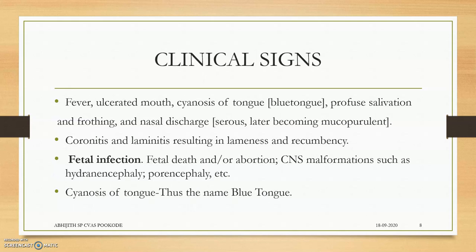Clinical signs include fever, ulcerated mouth, and cyanosis of the tongue — that is mainly the reason for calling it Blue Tongue. There is profuse salivation, frothing, and nasal discharge, with the discharge progressing from serous to mucous and later becoming mucopurulent due to the activity of polymorphonuclear leukocytes. Coronitis and laminitis result in lameness and recumbency — that is why it is called dancing disease. Cyanosis of the tongue is the reason for the name Blue Tongue.